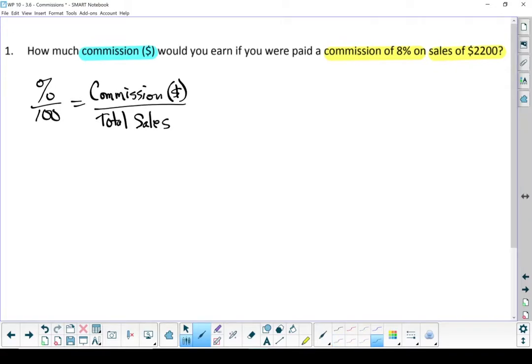Let's start with the formula. And let's put our numbers in. You earn 8%. That goes on the percent part. Your total sales are $2,200 and you don't know what your commission dollars are. So I'm going to put an X there. Let's cross multiply.